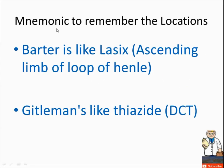A mnemonic to remember the locations of Bartter and Gitelman syndrome, important for USMLE Step 1: Bartter syndrome affects the ascending limb of the Loop of Henle. Gitelman syndrome is like a thiazide diuretic, affecting the distal convoluted tubule (DCT).